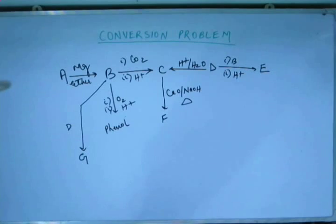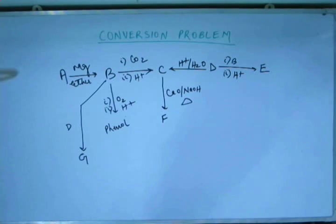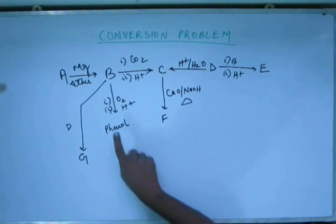And these alphabets are by no way symbols of any elements. Like this F is not fluorine. This F is some compound, organic compound that you have to identify based upon some of the given information. Now look at this. The information that is given here is very strong and the key to solve this conversion is this phenol.